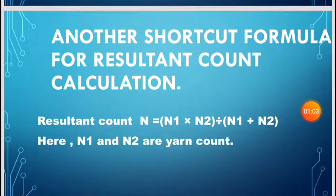Another shortcut formula for resultant count calculation: Resultant count N = (N1 × N2) ÷ (N1 + N2), where N1 and N2 are yarn counts.